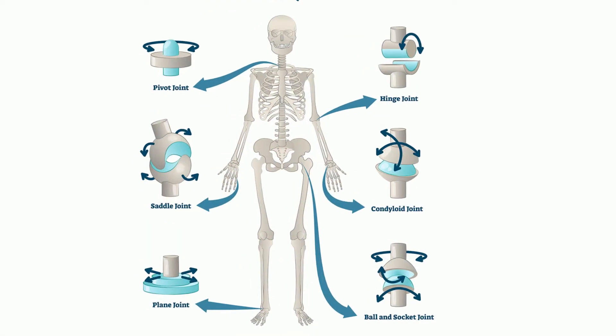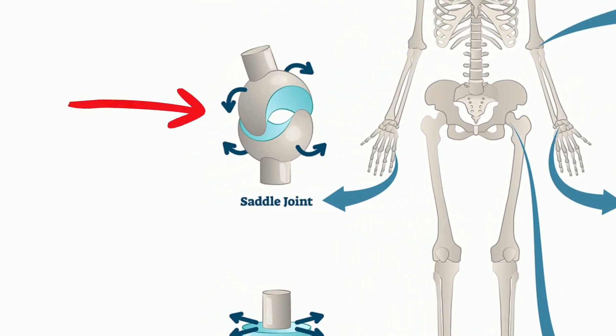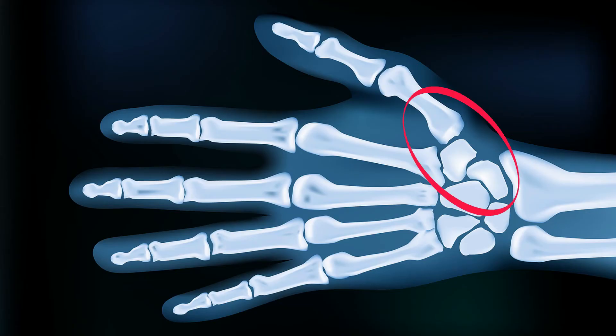Saddle joints are named because the ends of each bone resemble a saddle. An example of a saddle joint is your thumb joint, which can move back and forth and up and down, but it can move more freely than your wrist or fingers.